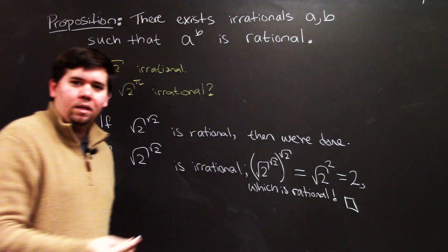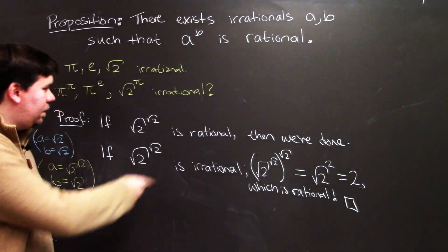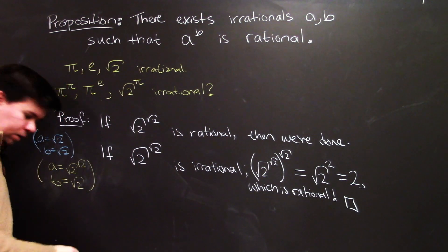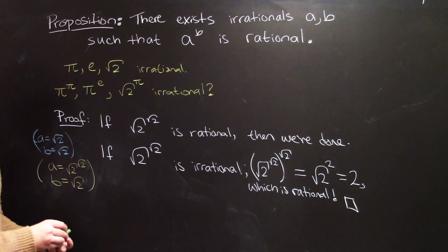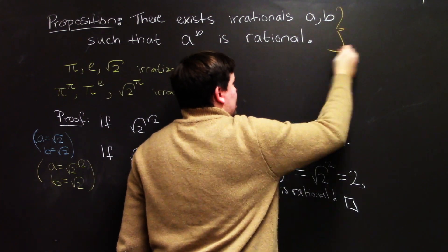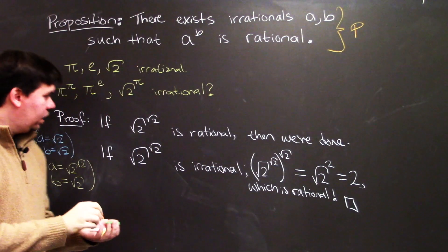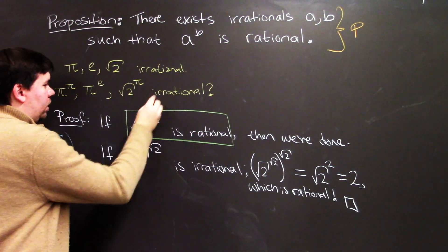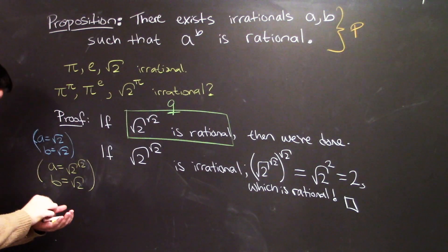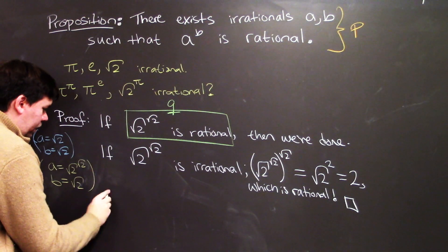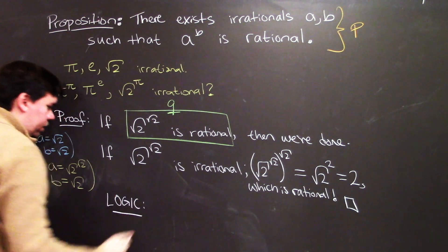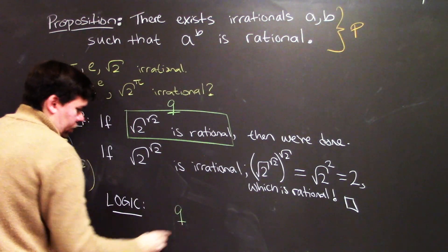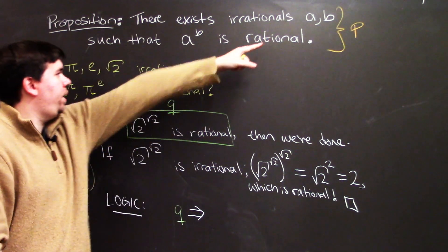That completes the proof. Now it might seem like we did something mysterious here, so let's reflect. I'll call the original proposition P — that there exist irrational a and b such that a to the b is rational. And I'll call the new proposition Q: that the square root of 2 to the square root of 2 is rational.